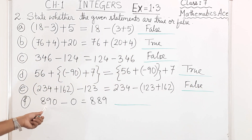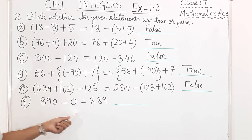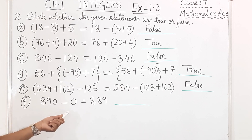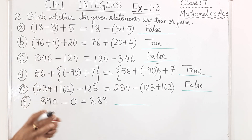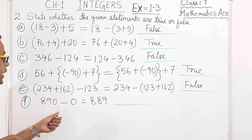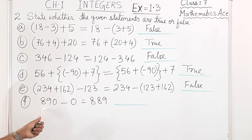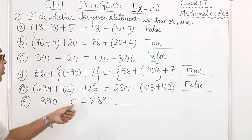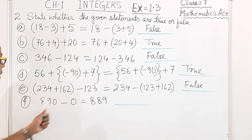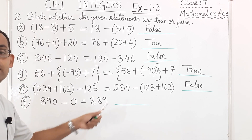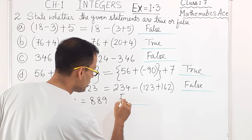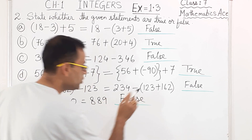Now: 890 - 0. You are subtracting 0, so this is the property of 0 under subtraction. When you subtract 0 from any integer, the outcome should be the same integer — it should be 890. But here it is given as 889, which is wrong. So this is false.